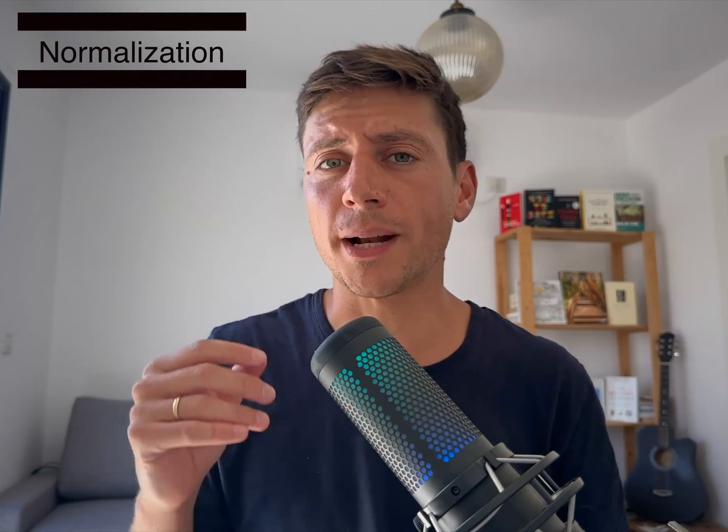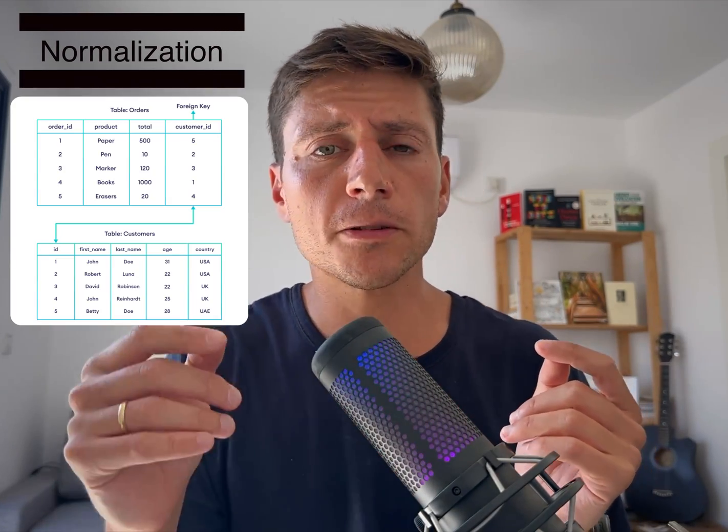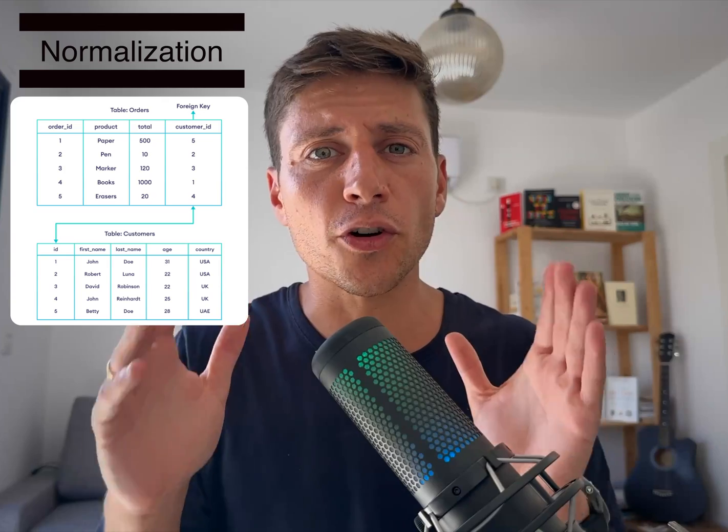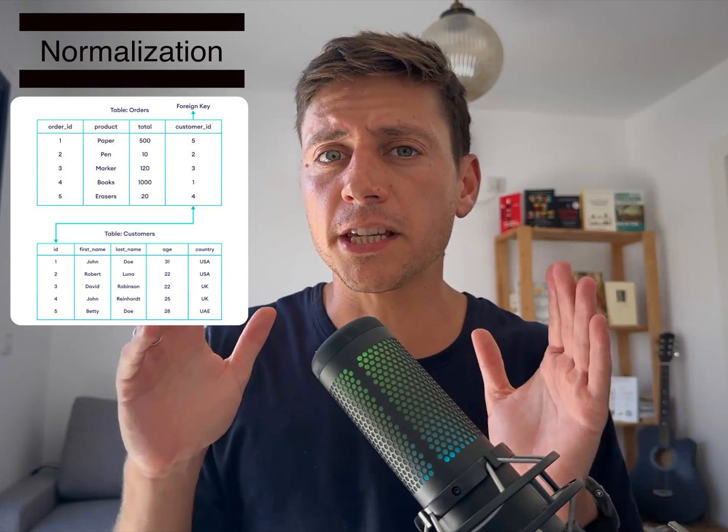To make sure the data in these tables is always synchronized with each other, we can implement a process called normalization. This process involves storing the data in separate tables that are joined by a foreign key. But as data size increases, relational databases encounter bottlenecks in CPU, memory, or disk usage.